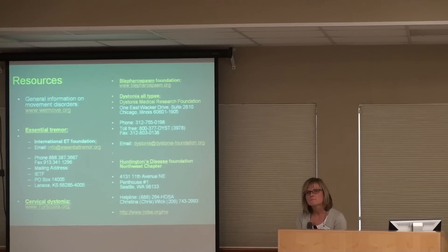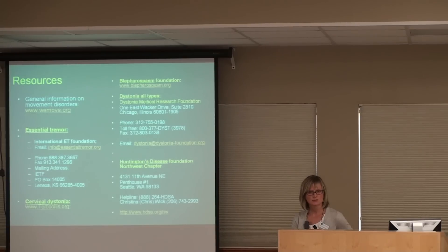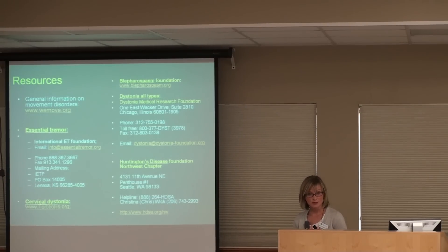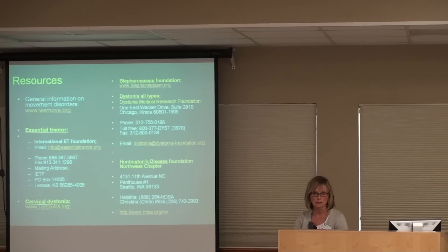Are the two surgical interventions available here locally, or only at UW? They're available in Seattle and Spokane. The gamma knife is done more in Spokane — there's a neurosurgeon there who does it. The centers in Seattle that do deep brain stimulation and are the best are Virginia Mason and Swedish, and the University also does it. A person would have to go for the surgery somewhere else, but all the post-care and pre-care can be done here because we do manage the stimulators locally. They just have to get them implanted somewhere else.